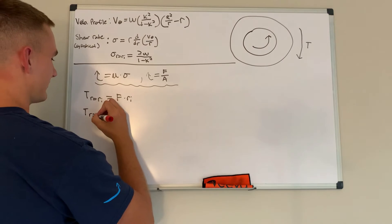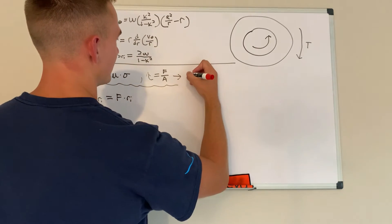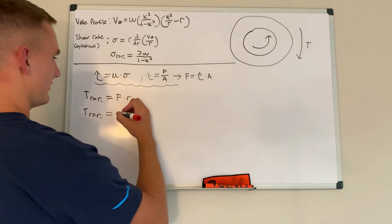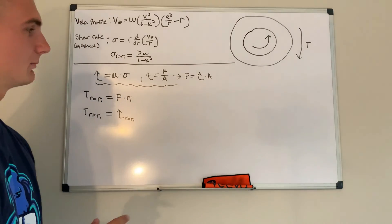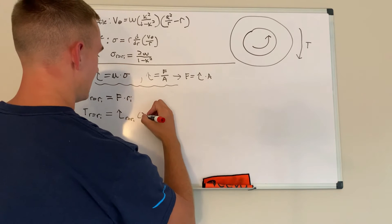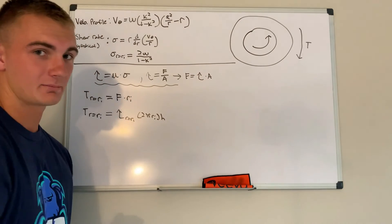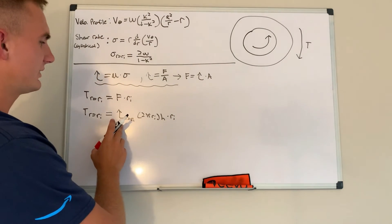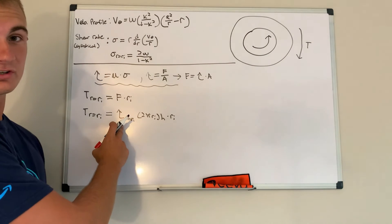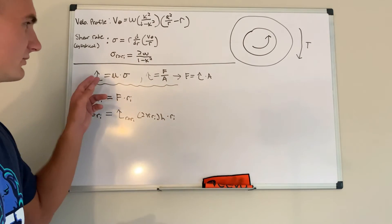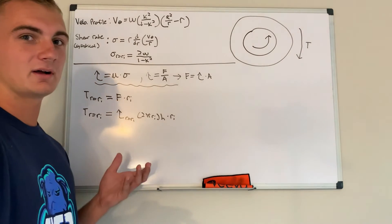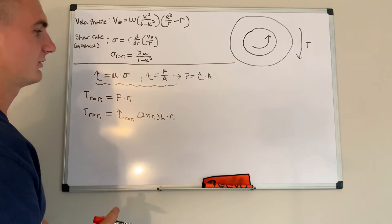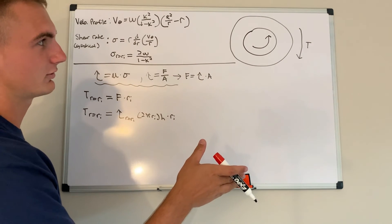The torque at R equals Ri is equal to F times Ri — force multiplied by the lever arm (the inner radius). Substituting in, since force equals shear stress times area, we have: shear stress at R equals Ri, multiplied by the cross-sectional area (2π·Ri·h), and then multiplied by the lever arm Ri. We can substitute Newton's law of viscosity for the shear stress — viscosity times shear rate — which is why we derived the shear rate at the inner cylinder surface.